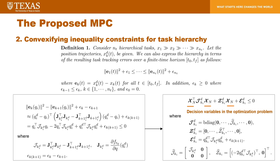Secondly, we define the constraint for task hierarchy. Given n tasks, the tracking error of the higher-prioritized task should be less than that of the lower-prioritized task. We construct this constraint using the square of the two-norm of the task tracking errors and formulate n_t minus 1 inequality constraints. These inequality constraints are nonlinear because the task function is nonlinear in terms of the joint variables. Thus, we convexify the inequality constraint function using nominal trajectories. The epsilons are designed to prevent both task tracking errors from becoming equal. By stacking the convexified inequality constraints, we formulate a quadratic inequality constraint.